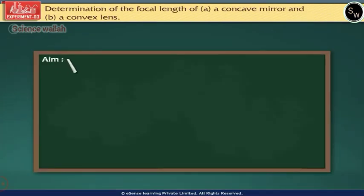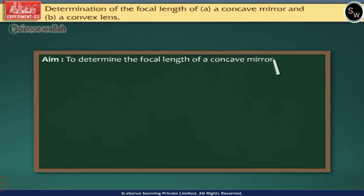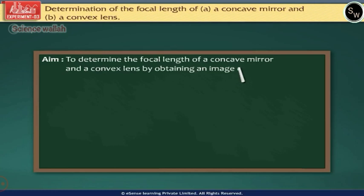The aim of this experiment is to determine the focal length of a concave mirror and a convex lens by obtaining an image of a distant object.